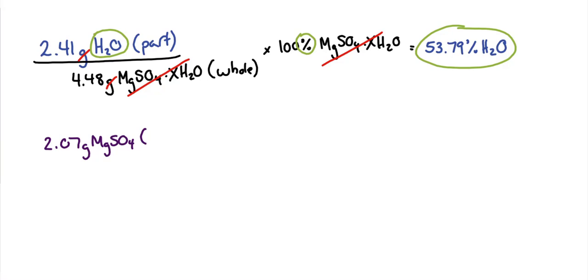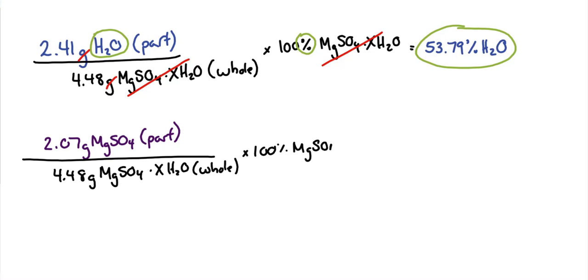2.07 grams of magnesium sulfate after it's been dried out. That is our part. And we're going to divide by the same whole of 4.48 grams of the hydrated salt sample that we took at the beginning. We'll then multiply that by 100%, and we'll end up with our answer.